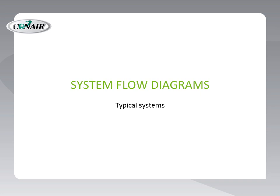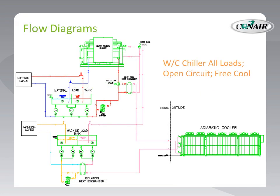Let's take a look at a couple of them. This is an example showing the EarthSmart tower on the right serving machine loads and providing the condenser medium for a chiller serving the material loads. Incorporated into this system is a free cooling heat exchanger to allow the EarthSmart tower to provide chilled water for material loads at lower ambient conditions.